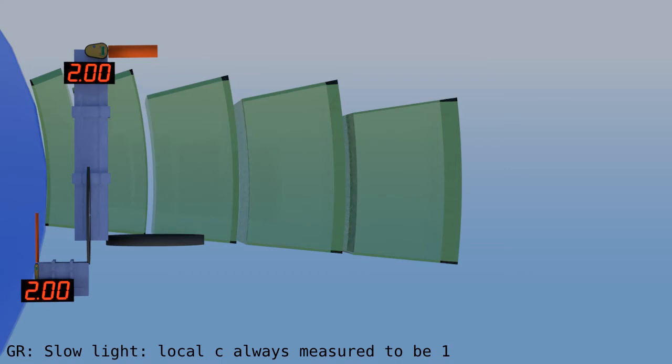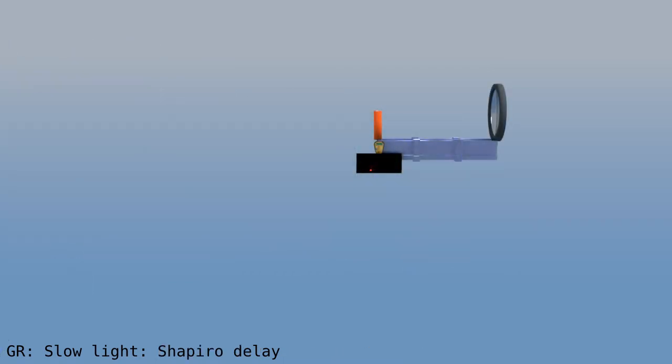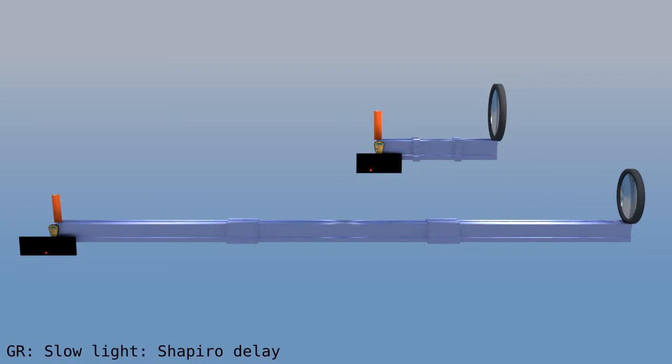Now, these little devices always measure the local speed of light to be one. At the same time, we see that the bookkeeper's speed of light often is lower than one. Can we measure this bookkeeper's speed of light? Yes, we can. We just need a longer device. This device is 5 units long, so the clock will measure 10 units of time. Now, because it's boring to wait for 10 seconds, we'll sometimes fast-forward the process, like this.